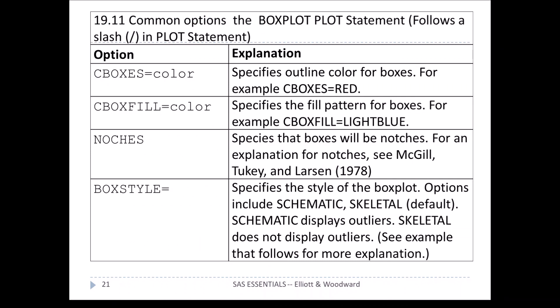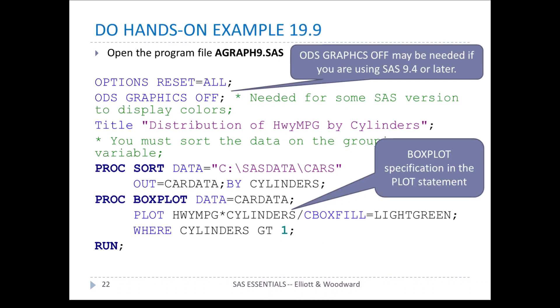Some common options for the PROC BOXPLOT plot statement include cboxes equal color and cboxfill equal color. The notches option comes from a type of box plot defined by McGill, Tukey, and Larsen. The box style option specifies the style of the box plot — schematic, skeletal, and so forth.